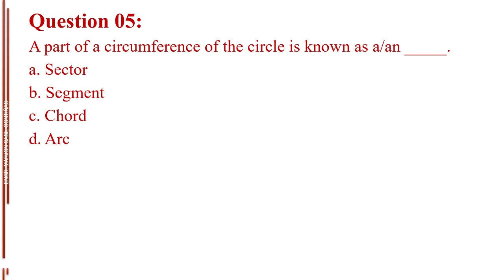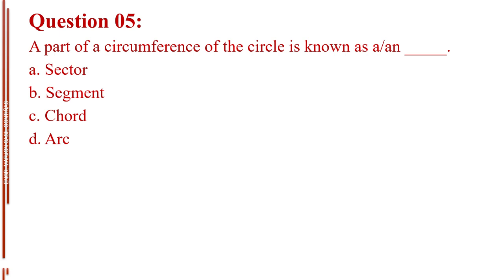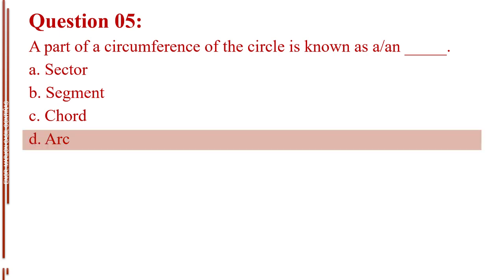Question number 5. A part of a circumference of the circle is known as a blank. Letter A, sector. Letter B, segment. Letter C, chord. Letter D, arc. The answer is Letter D, arc.